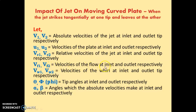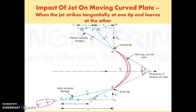Next, Vf1 and Vf2 — velocity of flow at inlet and outlet respectively. Vf1 is the velocity of flow at inlet, and Vf2 is the velocity of flow at outlet.